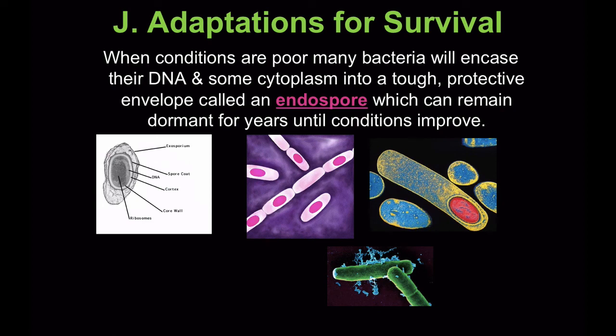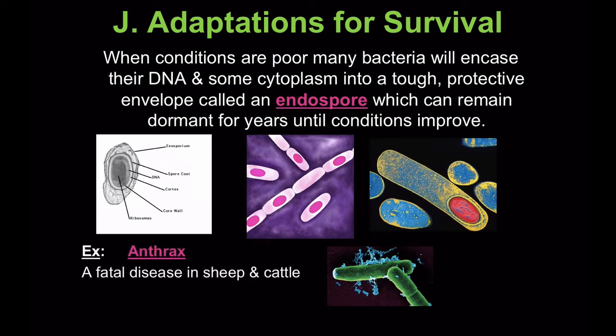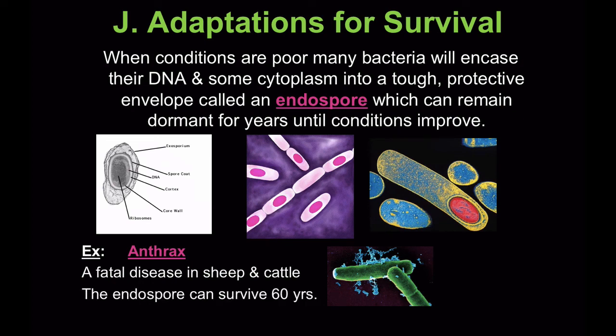Adaptation and survival: when conditions are poor, many bacteria will encase their DNA and some cytoplasm into a tough protective envelope called an endospore, which can remain dormant for years until conditions improve. An example of this is anthrax, a fatal disease in sheep and cattle, where the endospore can survive for 60 years.